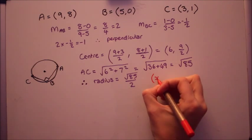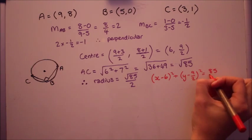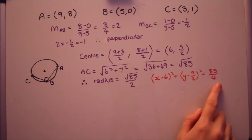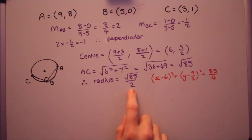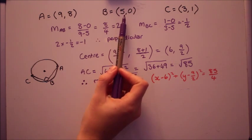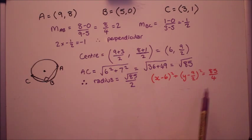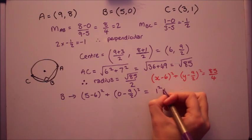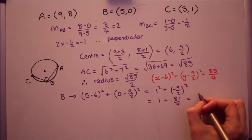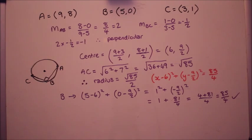The equation of the circle then, remember to square the radius in the equation, root 85 squared is just 85 and then 2 squared as well is 4. So now we've got the equation of the circle, we can show that b lies on it by substituting in the coordinates of b and showing that it works in this equation. OK, so because I got 85 over 4 that does match the equation so it does lie on the circle.